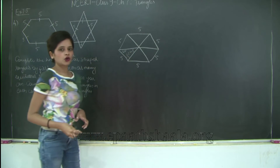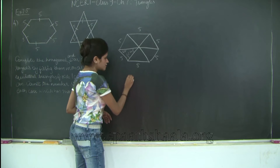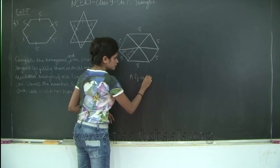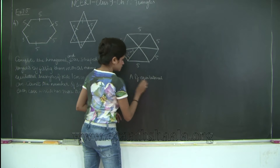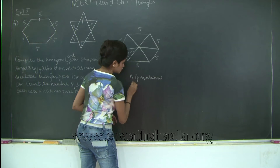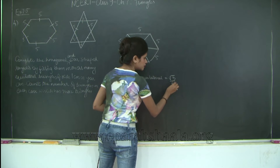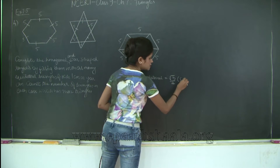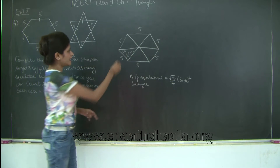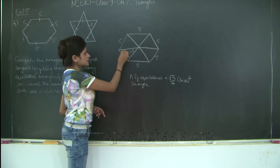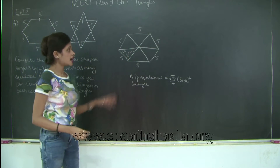Each of these triangles has angles of 60 degrees, 60 degrees, and 60 degrees. What do we know about the area of an equilateral triangle? The area of an equilateral triangle is given by (√3 / 4) × side². So what do we have? Each side is 5 centimeters or 5 units, therefore this side is also 5 units and this side is also 5 units.